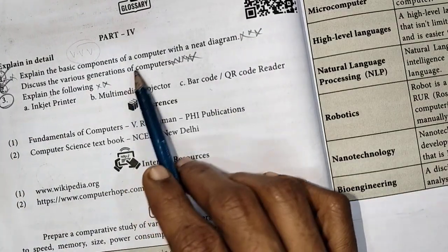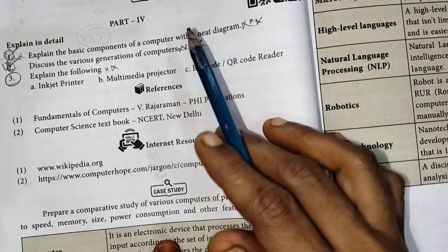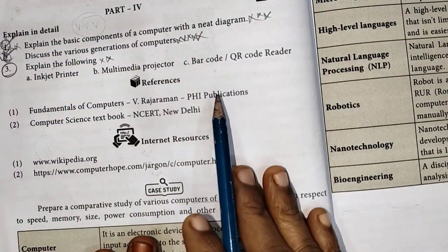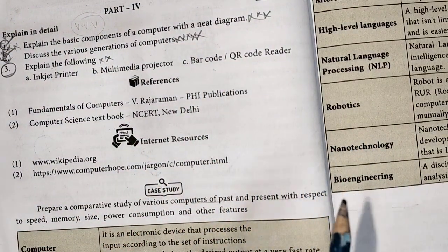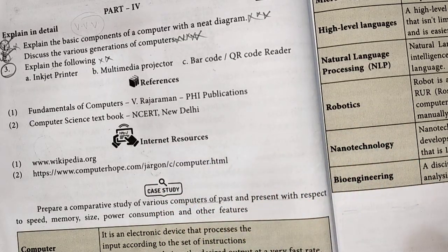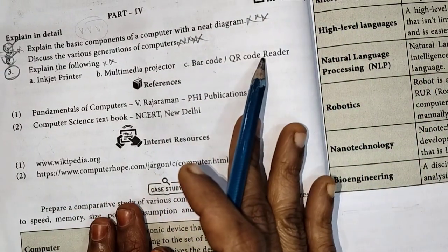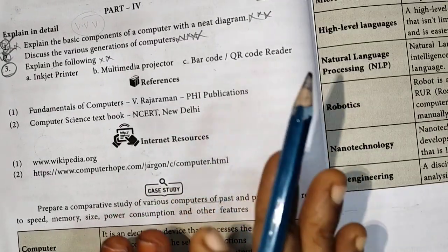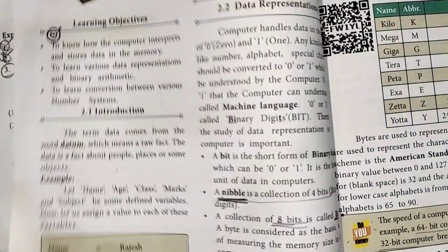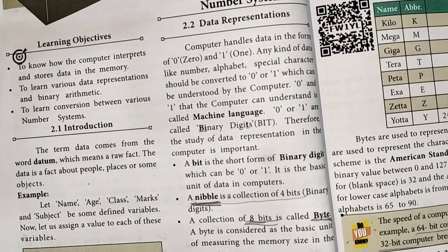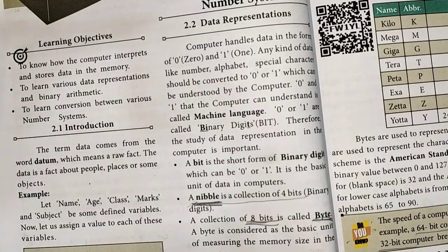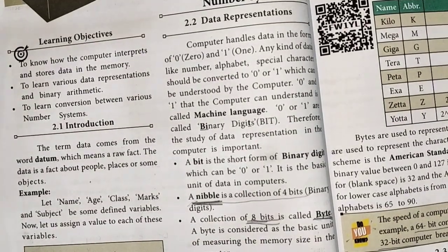In Part 4, the first unit has 3 important questions. If you have those 3 questions ready, we will ask the 5-mark as well. This is a very important question — these are the 3 questions that must not be missed. Unit 1 is the Fundamentals of Computers.